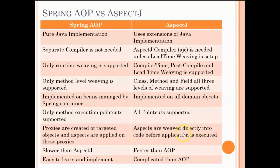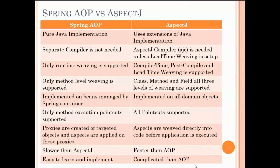Whereas for AspectJ, it is woven directly before the code application is executed — it also supports compile time and post-compile time, so this will happen even before the code executes, making it comparatively faster than the traditional Spring AOP approach. One advantage of Spring AOP is that it is easy to learn and implement, whereas AspectJ is more complicated because there are a lot of third-party libraries and you need to use the AJC compiler. However, the advantages that AspectJ provides are far more, which is why most people these days prefer AspectJ.